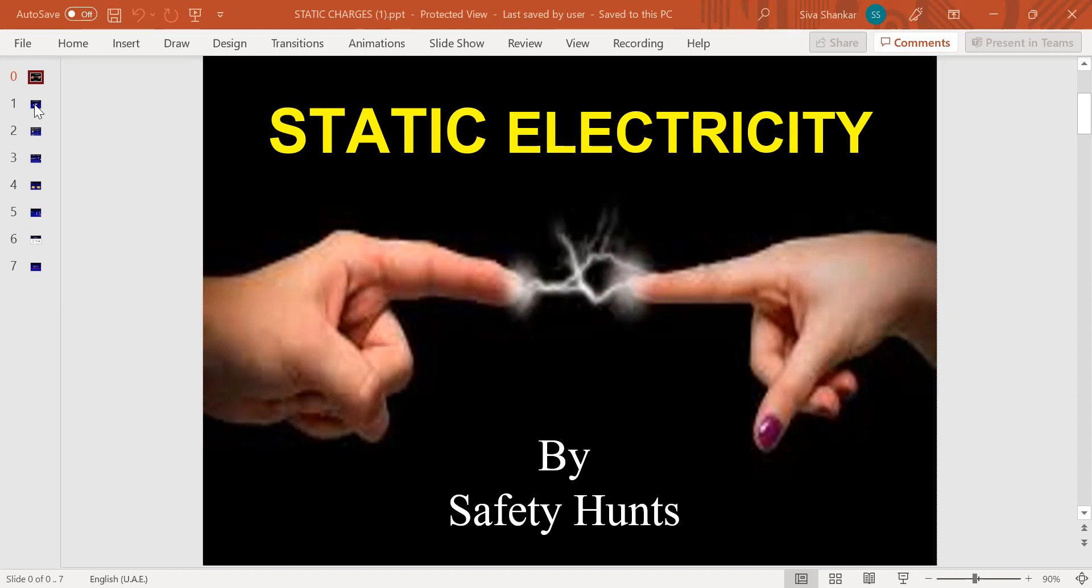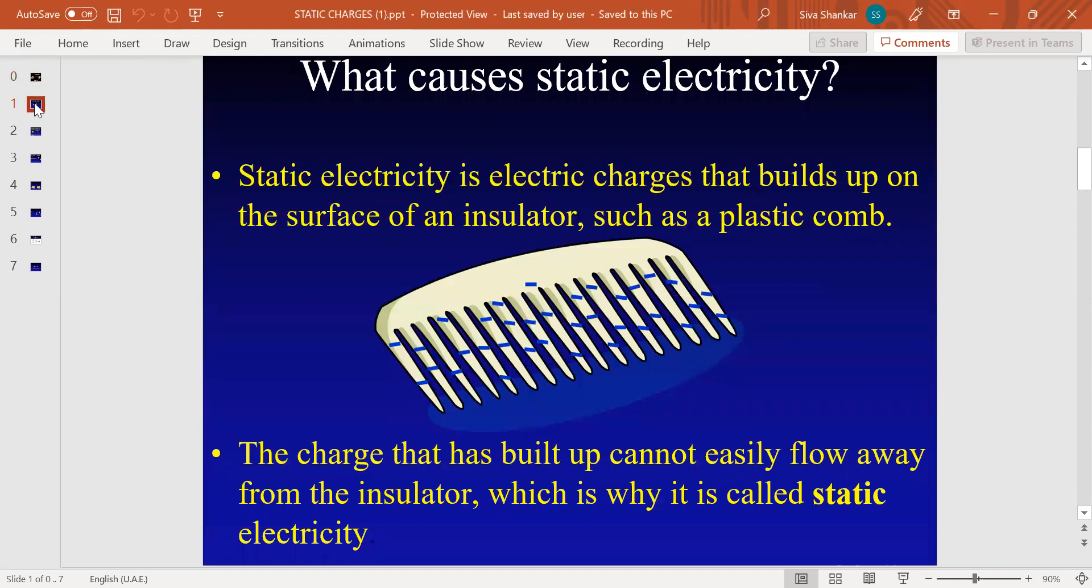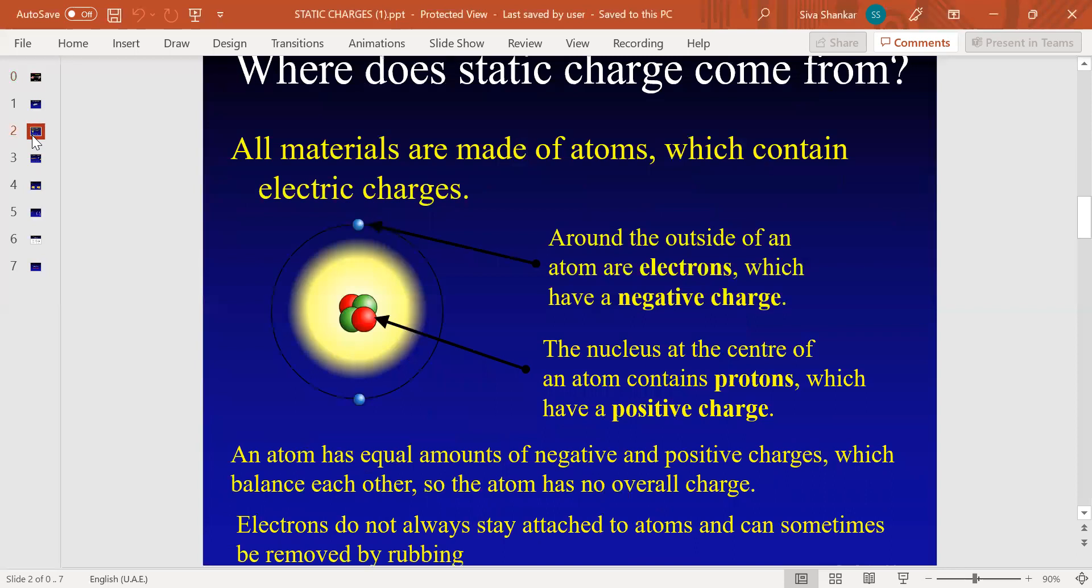If not properly controlled, it may lead to dangerous situations. Now we will see what causes static electricity. Static electricity is electric charges that build up on an insulator, created by rubbing or friction. These charges, once built up, will not move freely, which is why it is called static electricity.